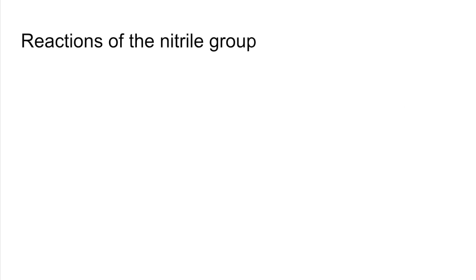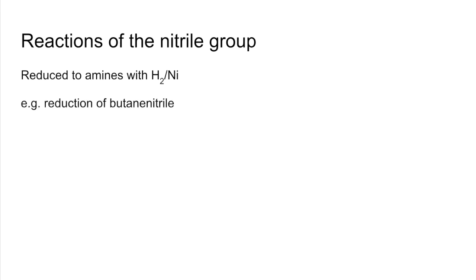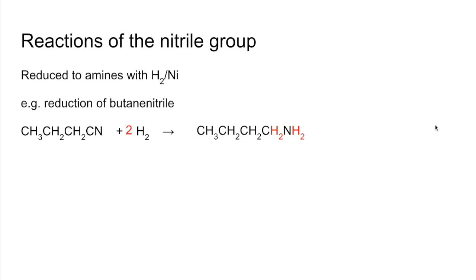We'll finish with two reactions of the nitrile group. The first is reduction of the nitrile group using hydrogen and a nickel catalyst — nitriles are reduced to amines. Using butanenitrile as the example, the hydrogens added are highlighted in red. To balance the equation, two moles of H₂ are required per nitrile group reduced. The amine produced is butylamine.